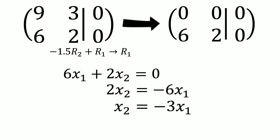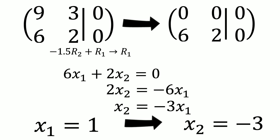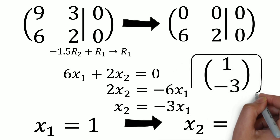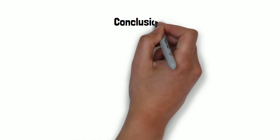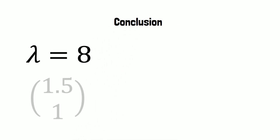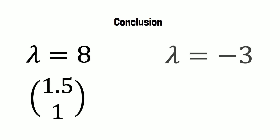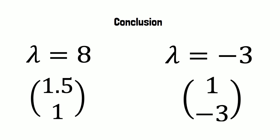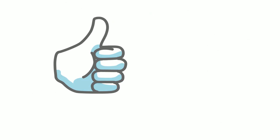We can now choose any value for either x1 or x2. In this case we will say that x1 equals 1. This means that x2 has to be minus 3. This gives us the eigenvector of 1 and minus 3. So, when we use the eigenvalue of 8, we find the eigenvector consisting of entries 1.5 and 1. When we use the eigenvalue of minus 3, we find the eigenvector consisting of entries 1 and minus 3. That brings us to the end of the video.